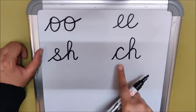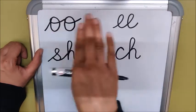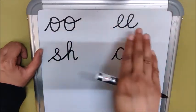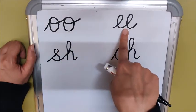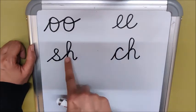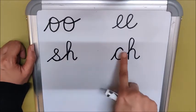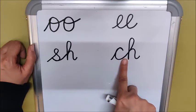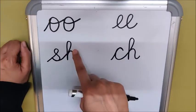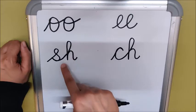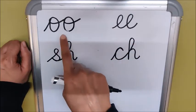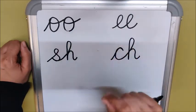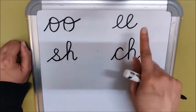Let us revise all of them again: U, E, Sh, Ch. Very good, children. Now let's play a game. I will place my finger anywhere and you will tell me its sound. So let us start.